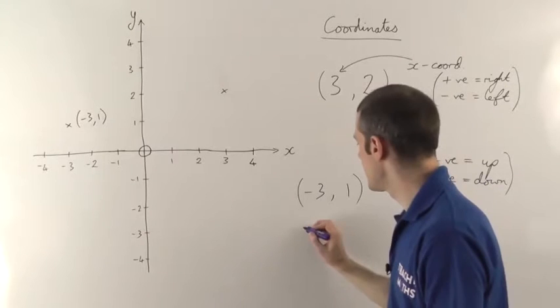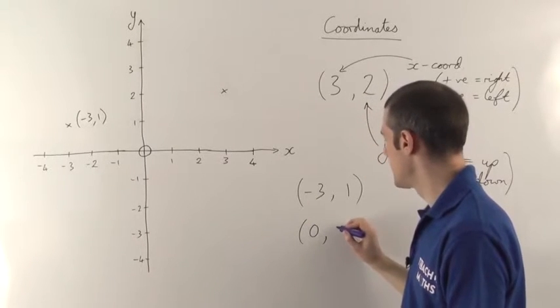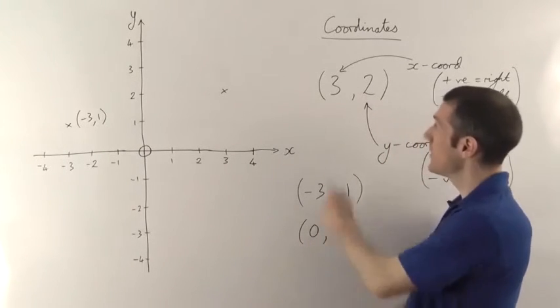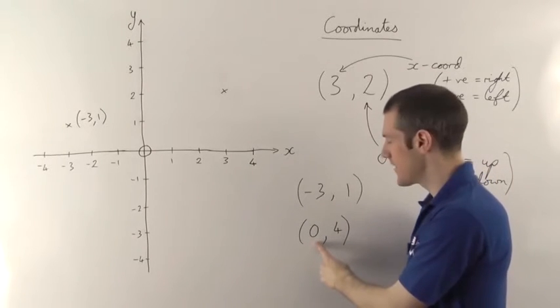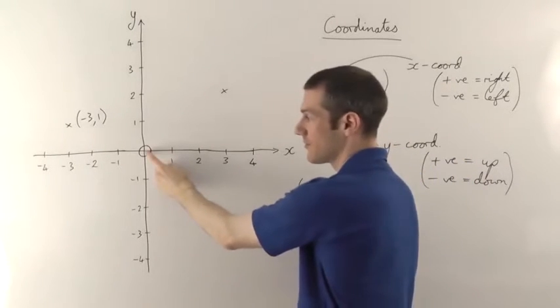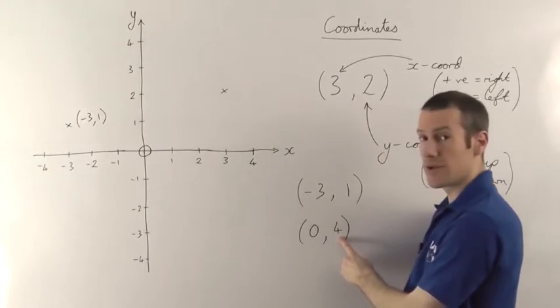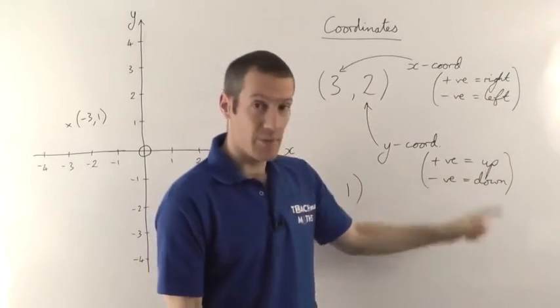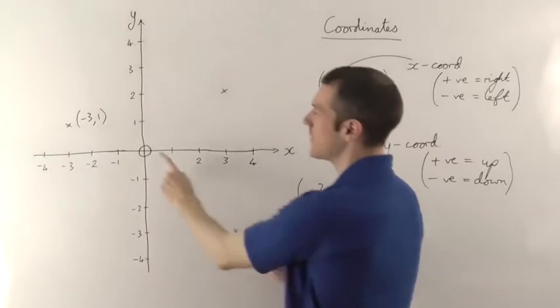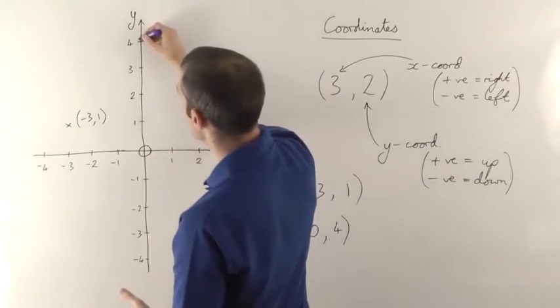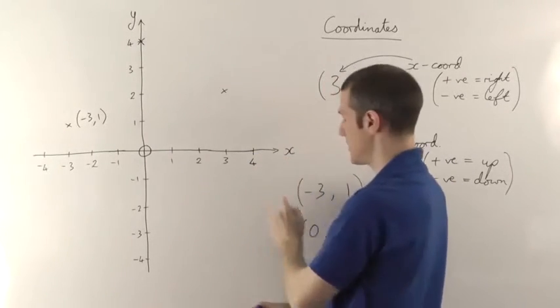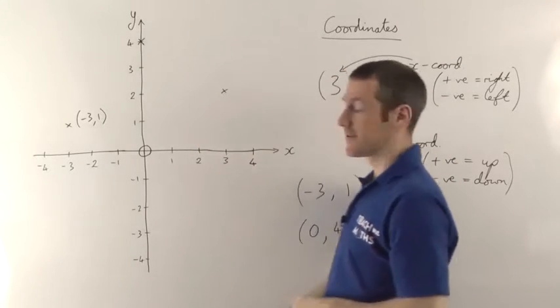Okay, let's try another one. Let's have 0 comma 4. Now then, if the x coordinate, the first one remember, is always the x coordinate. If the x coordinate is 0, that means you don't go left or right. You're at 0. So you're actually on that point there for the x. But the y coordinate, the second coordinate, is 4. It's positive, so we're going up. So you go 0 left or right from the origin, and then you go up by 4. So from here, go up to 4. You're actually going to be on the axis there, because you're at 0 as far as the x is concerned, but you're at 4 as far as the y is concerned. So that's what that one would look like.